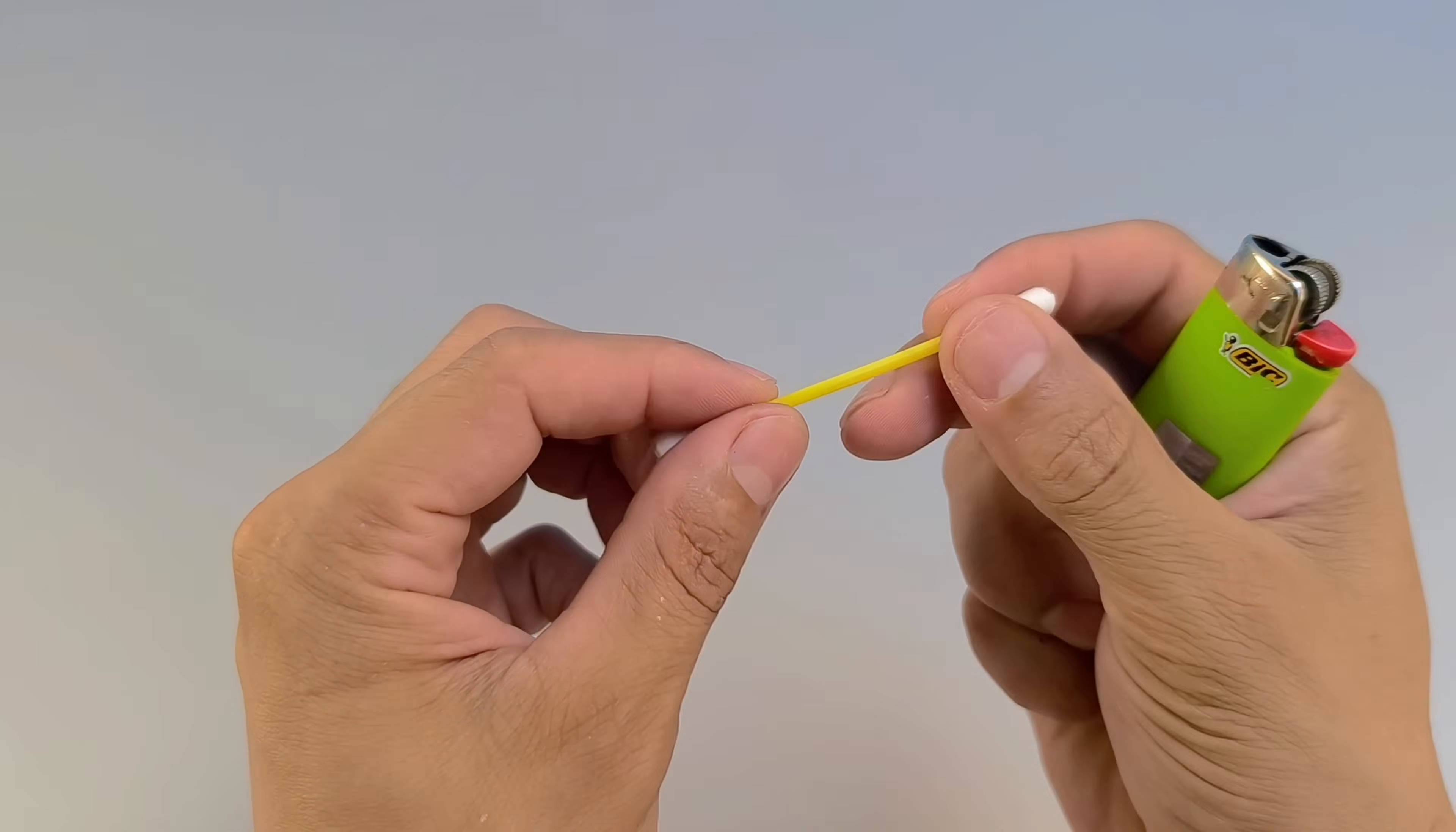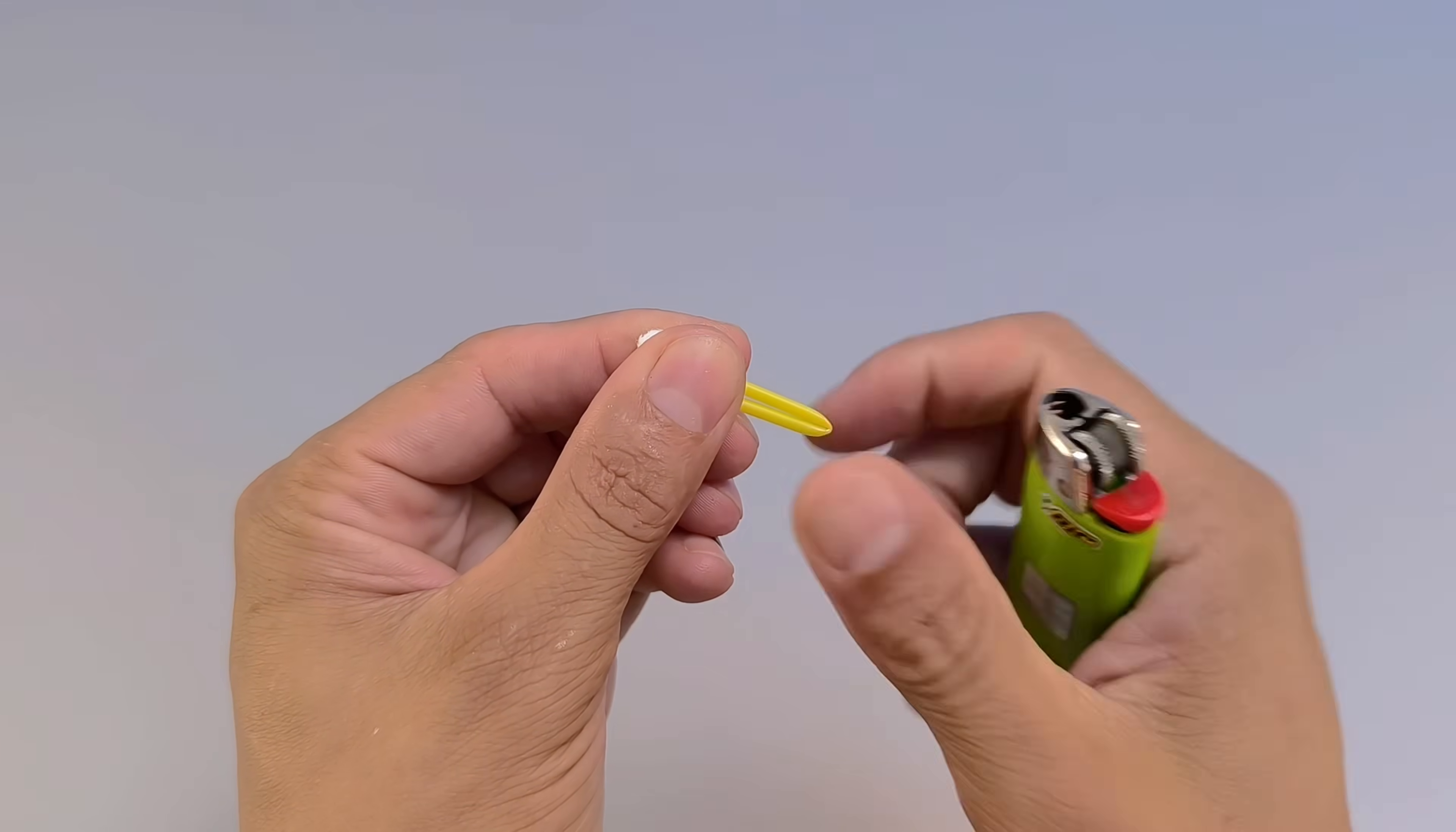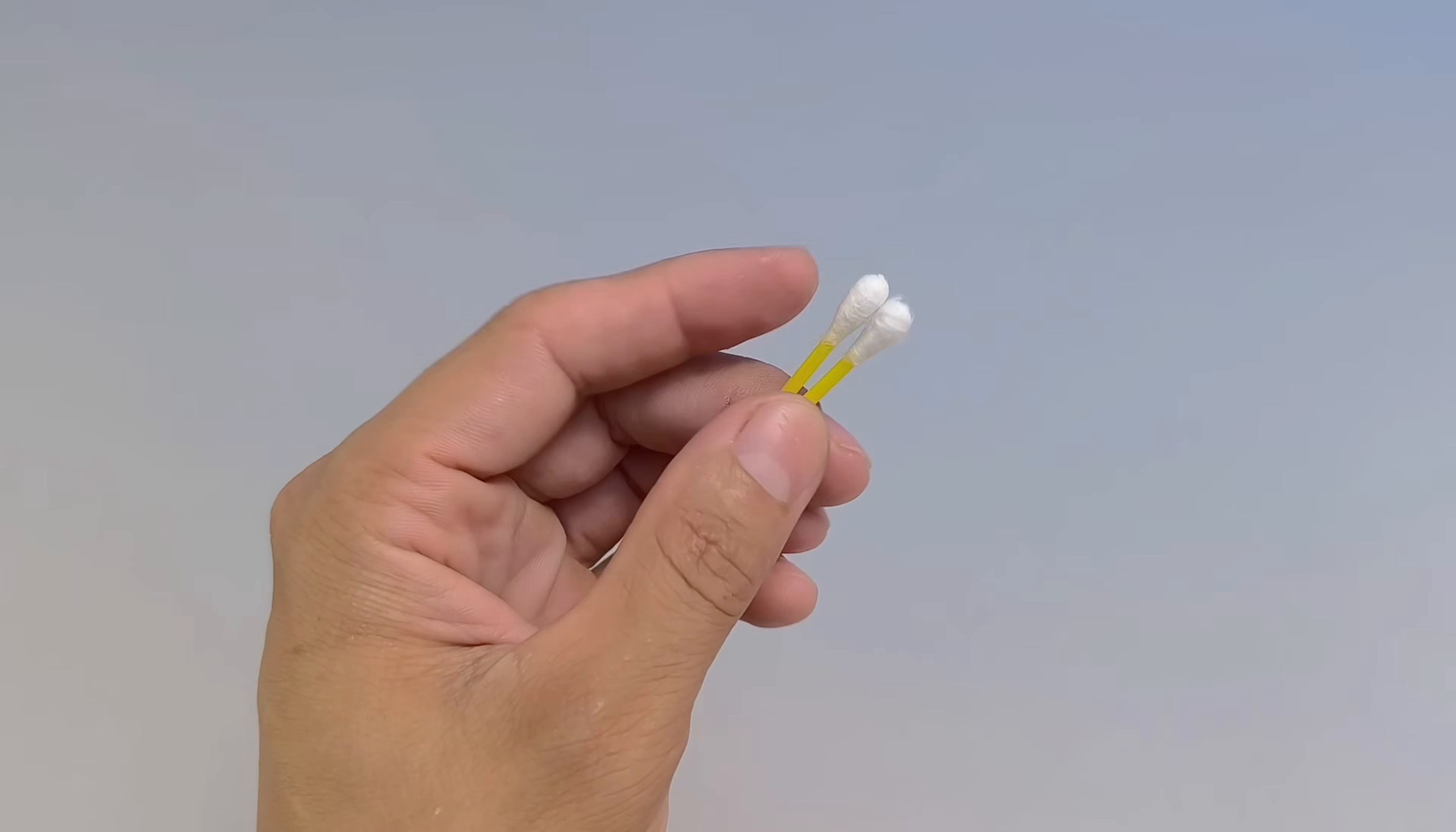The solution, surprisingly enough, starts with a trivial object: a cotton swab. Take a regular cotton swab and fold it in half, pressing firmly until you feel that the two ends are very close together.